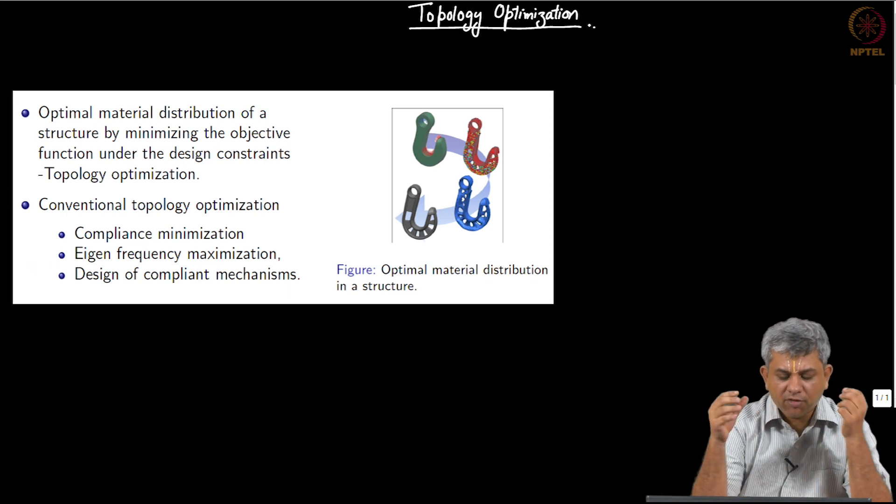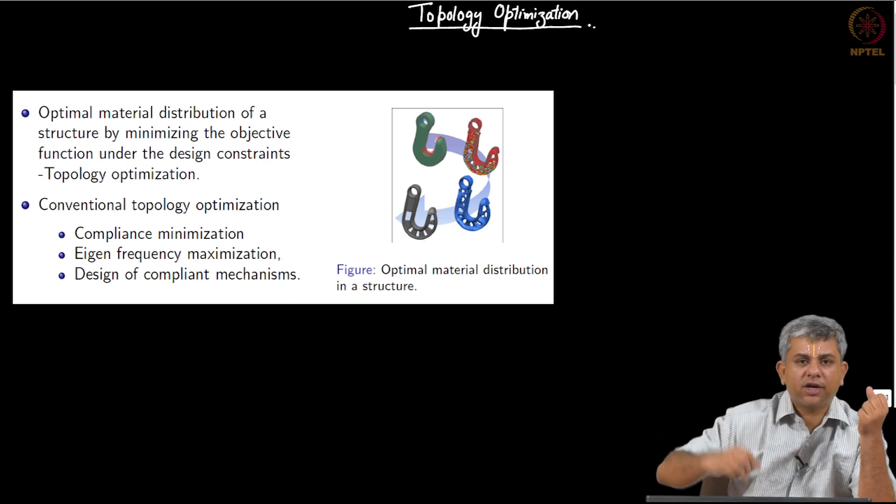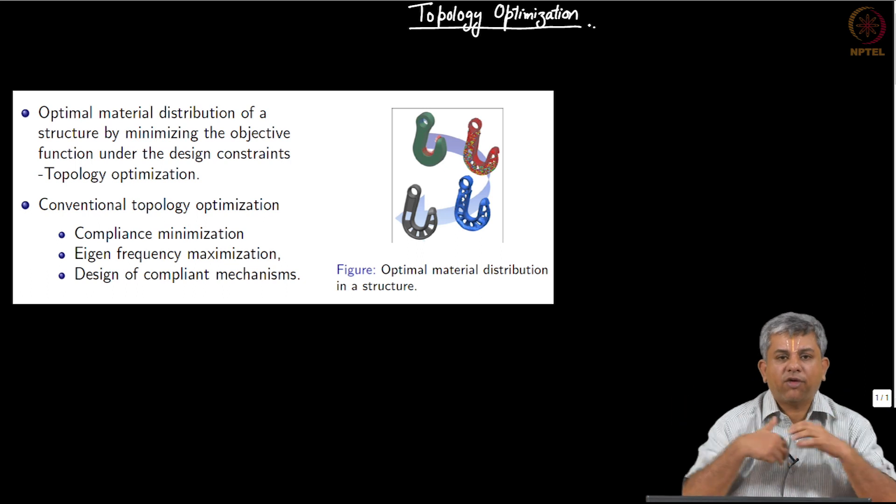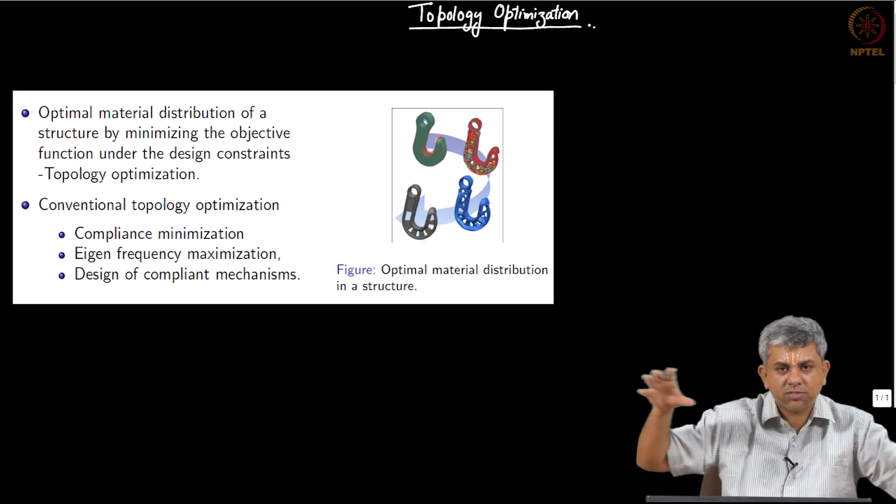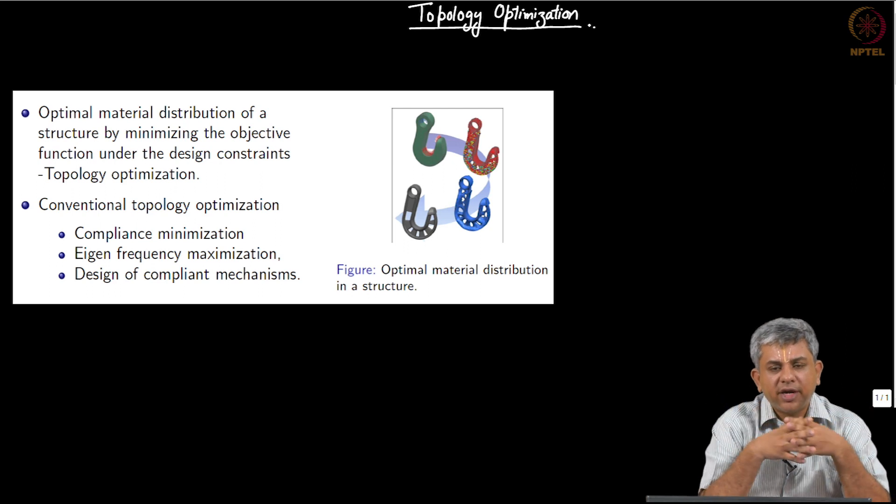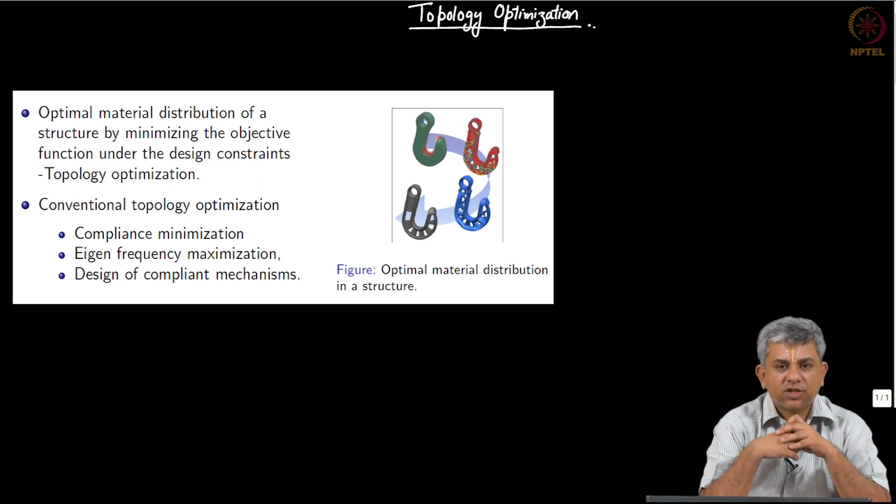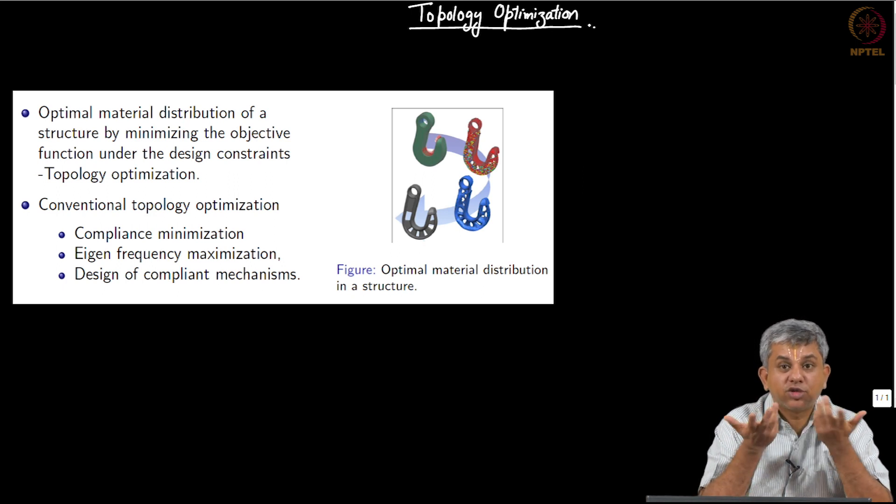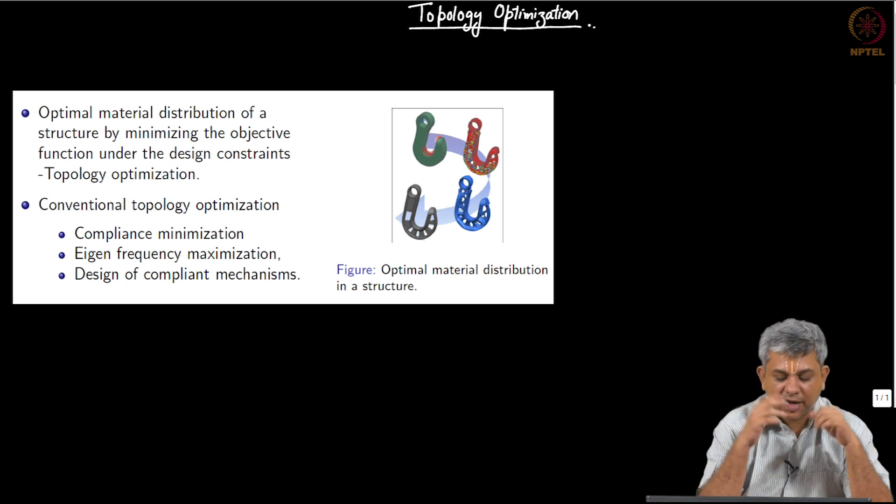Suppose you have a particular shape and a particular loading condition. For example, you have a building and you have certain beams that are supporting it, and you want to use as minimal material as possible. That is your constraint, and obviously you will have constraints such as it should not break, so you do not put such weak material or such sparse material that it actually breaks.